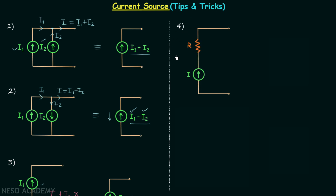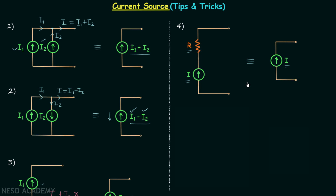In the fourth case, we have one current source providing current I connected in series with a resistance R. Whenever you have this situation, you can remove the resistance R and have an equivalent model with no resistance. However, this simplification can only be done while calculating parameters on the load side. When calculating parameters on the source side, we cannot perform this simplification — similar to the case of resistance connected in parallel with a voltage source discussed in the previous lecture.